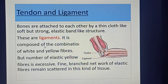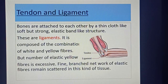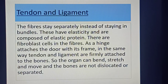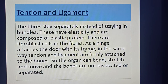Ligament is composed of a combination of white and yellow fibers, but the number of elastic yellow fibers is excessive. A fine network of elastic fibers remains scattered in this tissue. The fibers stay separately instead of staying in bundles and are composed of elastic protein. There are fibroblast cells in the fibers. Just as a hinge attaches a door to its frame, in the same way tendon and ligament are firmly attached to bone so the organ can bend, extend, and move without the bones being dislocated or separated.